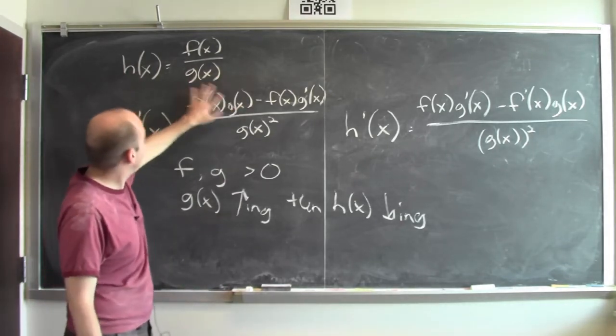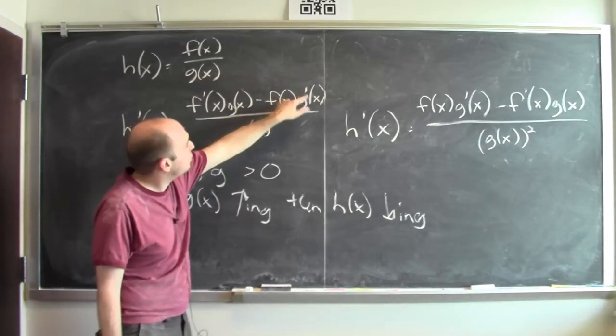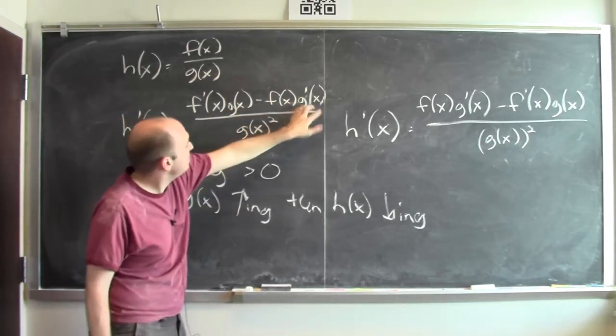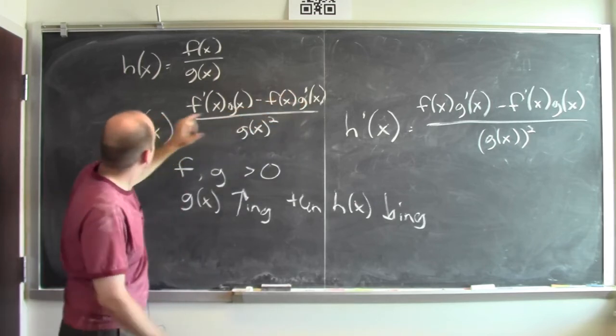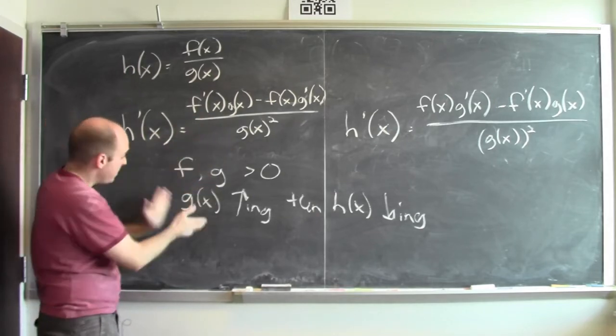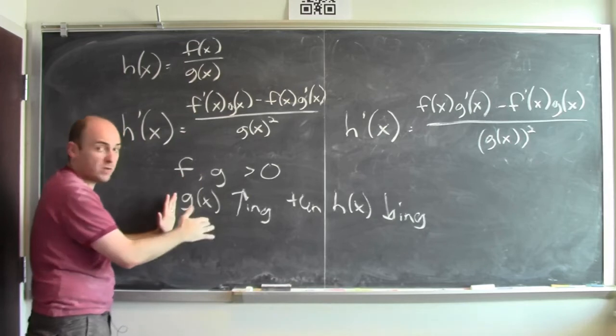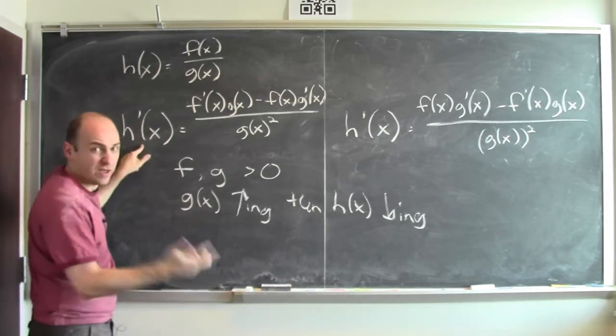That means the derivative of f isn't going to contribute at all to how h is changing. But here I've got f(x) times g'(x). If g is increasing, this is positive. I already told you f is positive, so this is positive, but it's minus. So that means h' is negative. And that's correct. If g is increasing, that means h should be decreasing. The derivative of h should be negative.